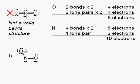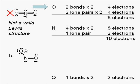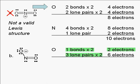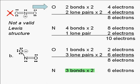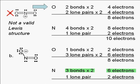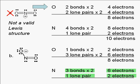What about B? Here we again have a double-bonded oxygen with two lone pairs, which we already determined follows the octet rule. The other oxygen has one bond giving two electrons and three lone pairs giving six electrons for a total of eight electrons, so this oxygen follows the octet rule. The nitrogen has three bonds giving six electrons and one lone pair giving two for a total of eight electrons. The nitrogen obeys the octet rule as well as both oxygens, so this is a valid Lewis structure.